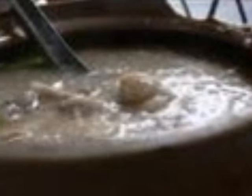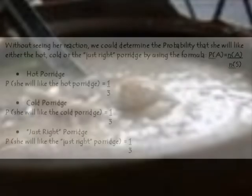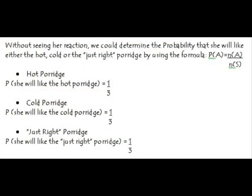Without seeing her reaction, we could determine the probability that she will like either the hot, the cold, or the just-right porridge by using the theoretical formula for probability: PA equals NA over NS. NA is the number of elements in the event space and NS is the number of elements in the sample space. So, for example, for hot porridge, the probability that she will like it is one third.